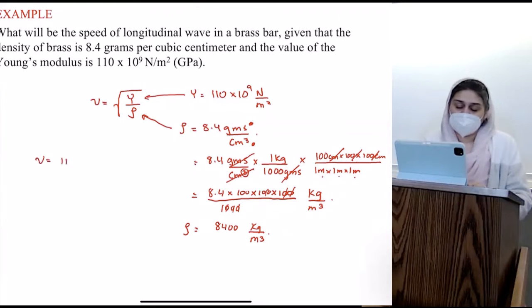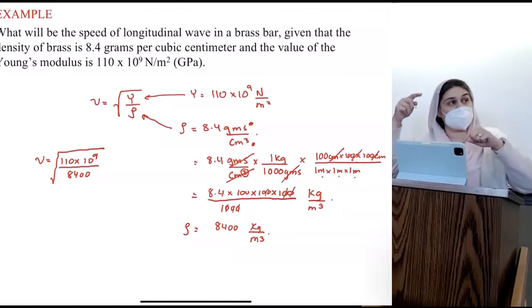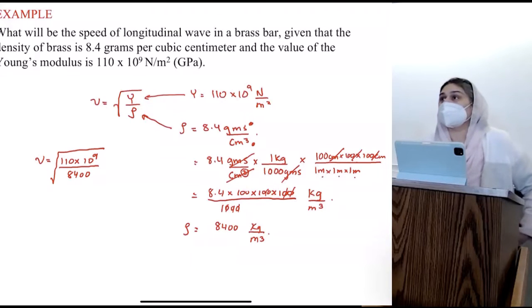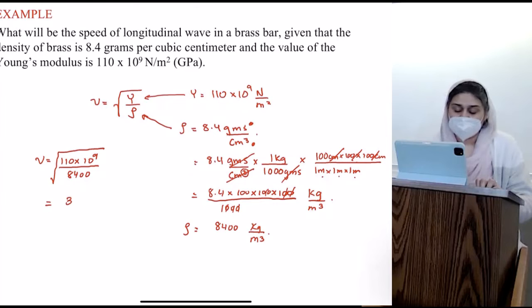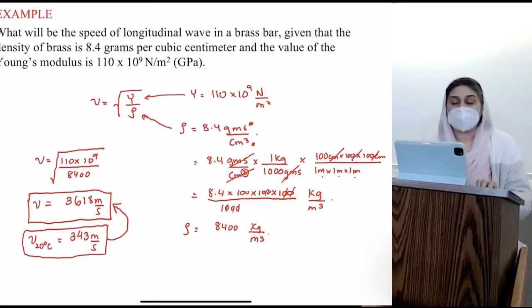So we will be 110 times 10 to the 9 divided by 8,400. Remember to take the big square root. I generally, when I plug these values in, I'll do the insides first. So I'll do 110 times 10 to the 9 divided by 8,400. Then once I find the answer for that, then I will square root it. It just works better for most calculators. I got 3,618 meters per second. So compare this to the speed of sound in air. Speed of sound at 20 degrees Celsius in air was 343 meters per second. So the speed of sound in brass is 10 times more than in air.